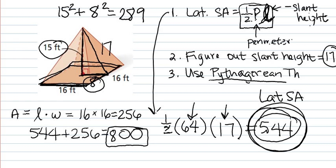And to get the total surface area, you add on the square at the bottom, which I did here, and then I got 800 for total surface area. So that's how it's done.